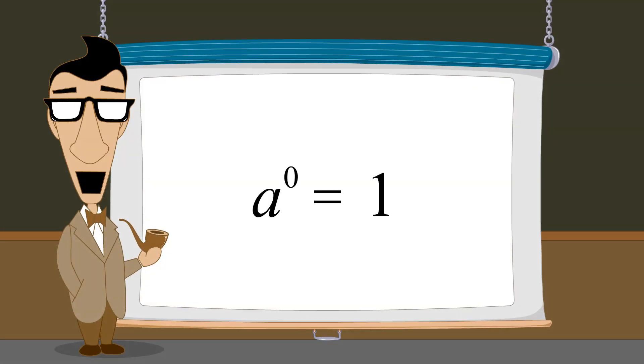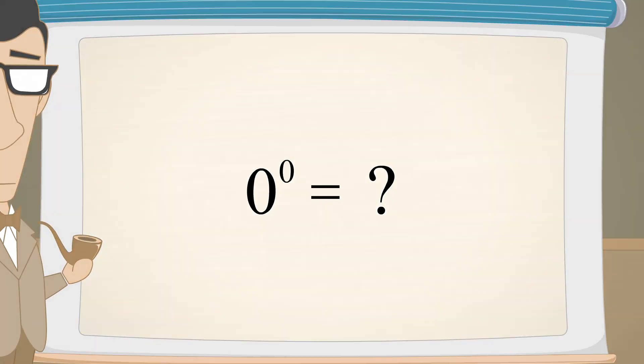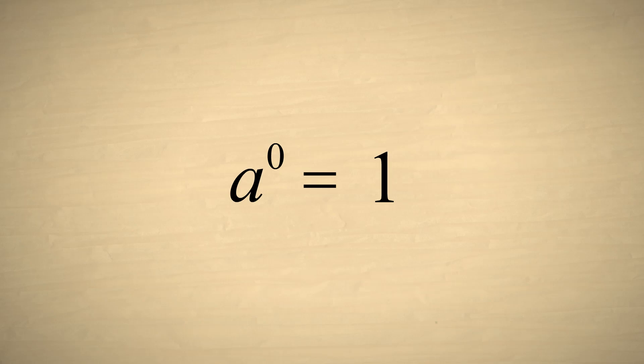There is one caveat to be aware of. What if a is zero? We showed that a raised to the zero power is one, so you would think that zero raised to the zero power should be one. The problem is that no matter how many times we multiply zero times itself, we always get zero. So is zero to the zero power one, or zero? The answer is that it is undefined.